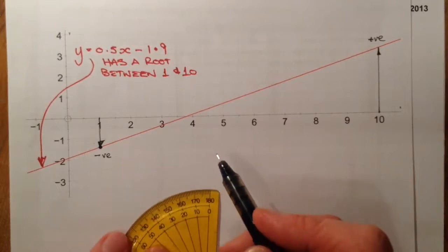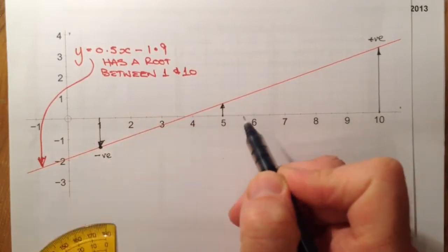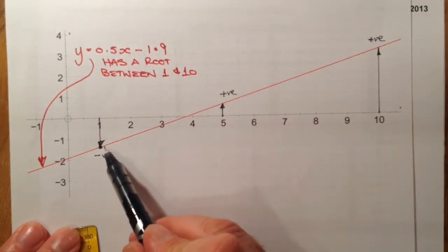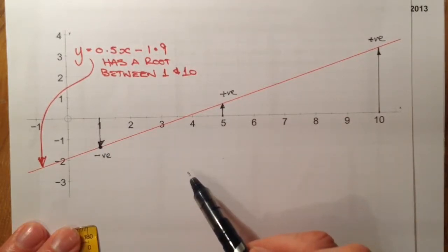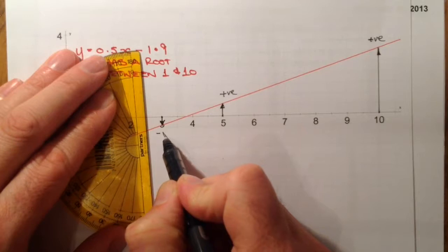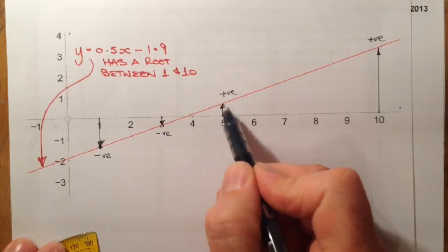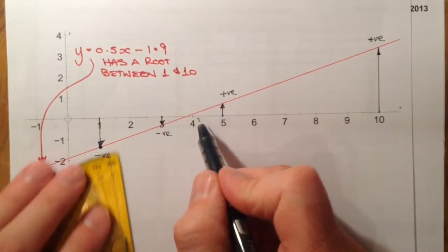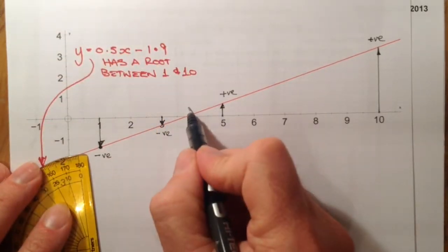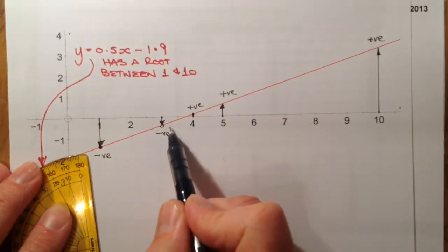Once I've got these two values, I choose other values based on the size of these values. This one being smaller tells me the root is closer to 1 than to 10. If I chose a midpoint of 5, that gives me a positive value, so now I know it's between 1 and 5. If I then chose 3, that gives me a negative answer, so it must be between 3 and 5. If I next choose 4, that gives a positive, so it lies between 3 and 4.